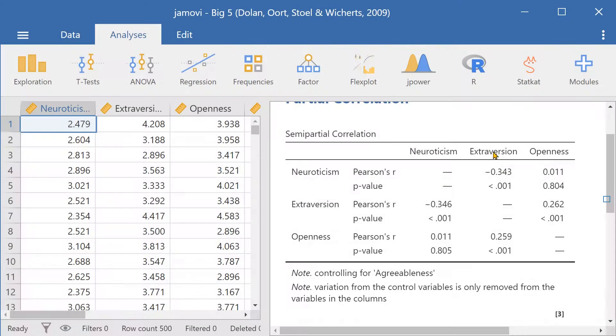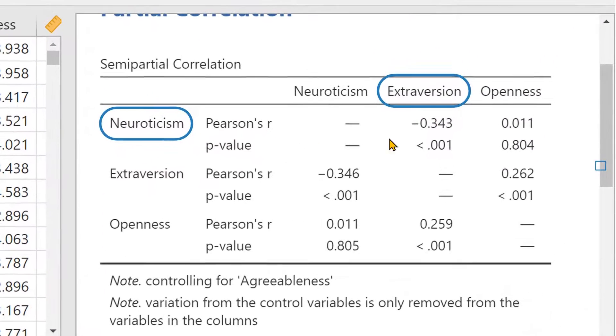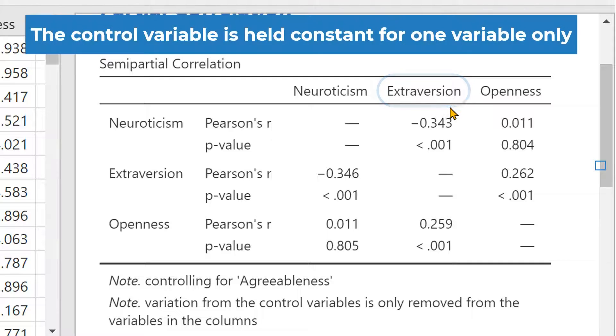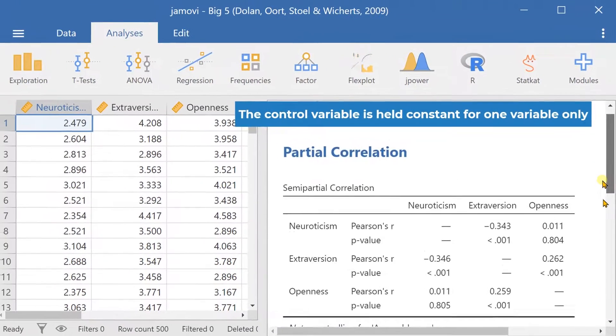And so if the correlation is between extroversion and neuroticism, the control variable is constant only for extroversion. This is the main difference between partial correlation and semi-partial correlation.